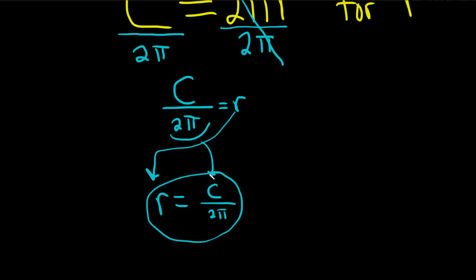Boom — and that's it. We've solved for r, which is actually the radius of the circle. I hope this video has been helpful.